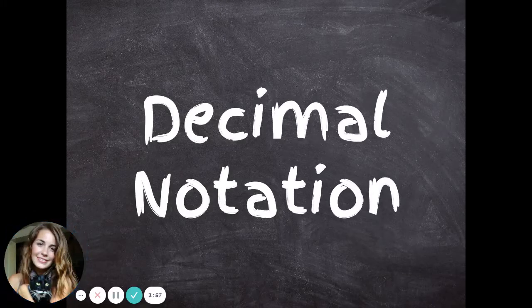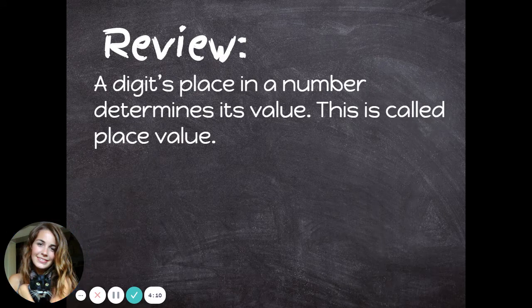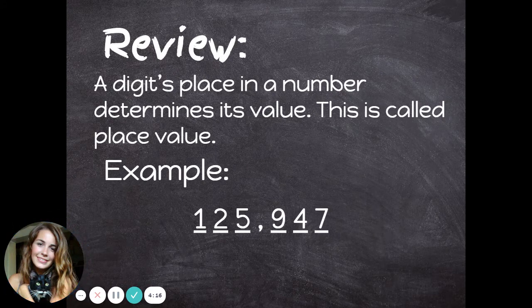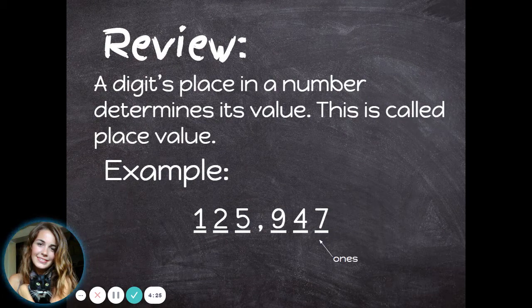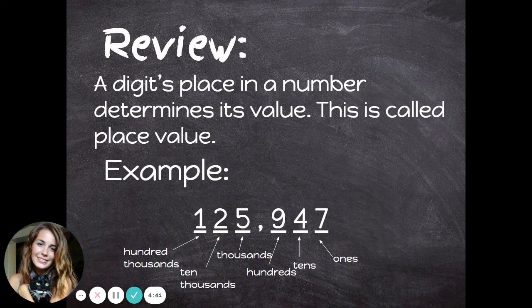Now let's talk about decimal notation. Remember that a digit's place in a number determines its value, and that this is called place value. We need to review place value to understand how to write a number in decimal notation. Let's look at this number: one hundred twenty-five thousand, nine hundred forty-seven. Each of these digits is in a place in this number. The seven is in the ones place, the four is in the tens place, the nine is in the hundreds place, then comes the comma, the five is in the thousands place, the two is in the ten-thousands place, and the one is in the hundred-thousands place.